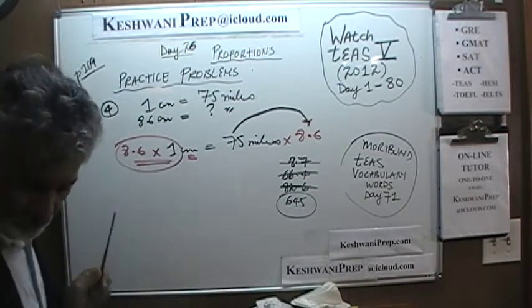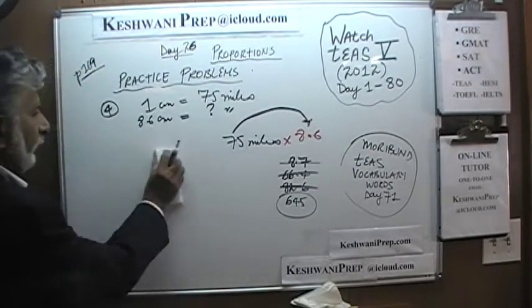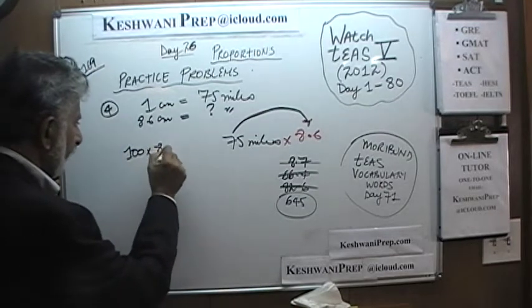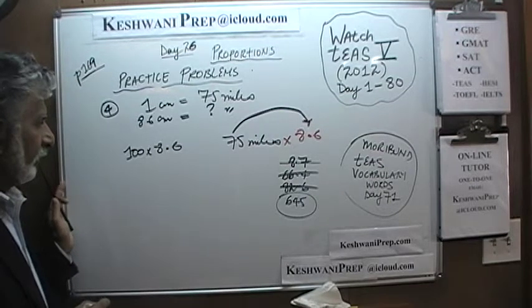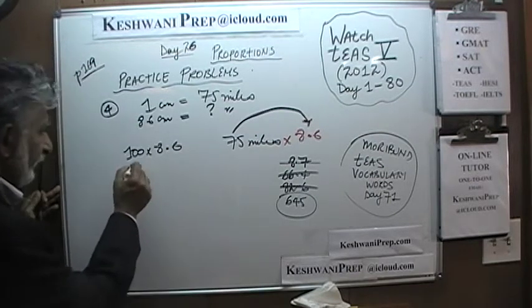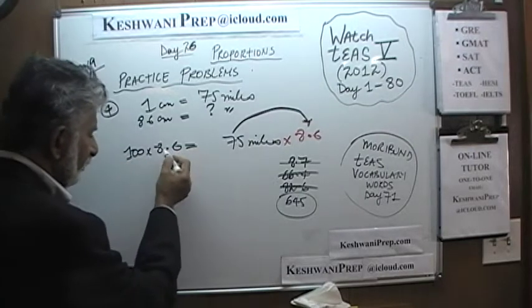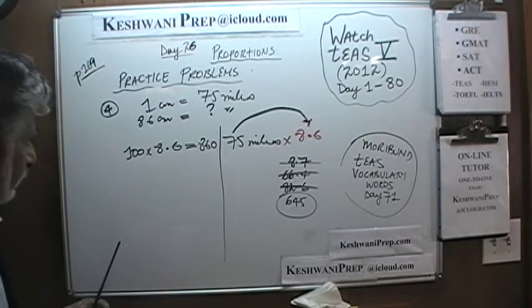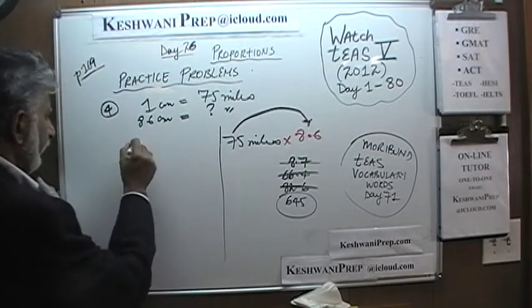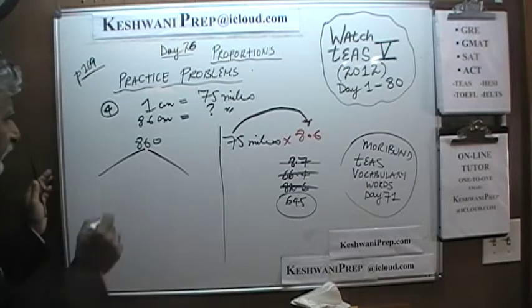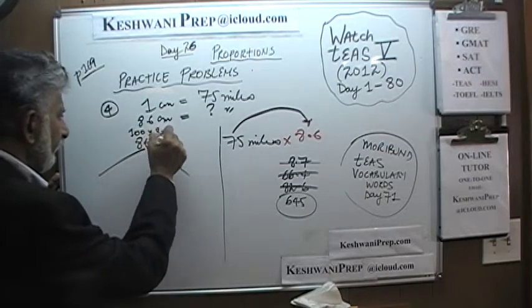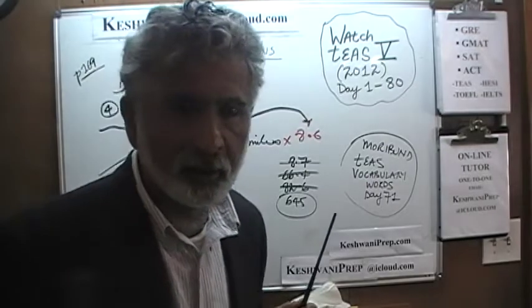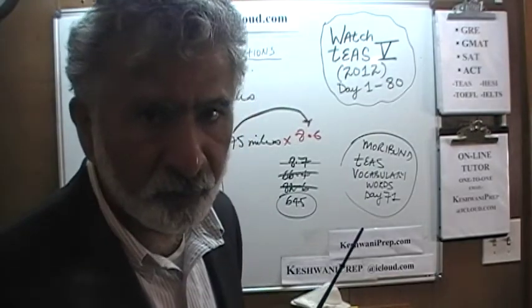Let us erase this part so I have room. We are trying to figure out 75 times 8.6. 100 times 8.6 — whatever that quantity is — if you multiply 100 by 8.6, you get 860. So let us write down 860. Remember that 860 represents 100 times 8.6. This is not the kind of calculation you should engage in during the real exam. Get all the insanity out of your system at home.